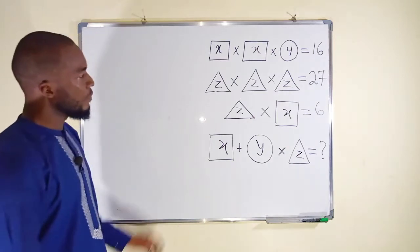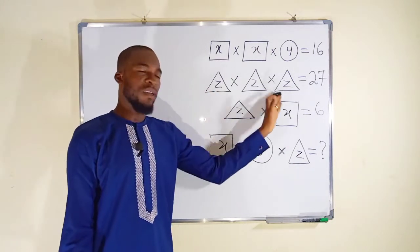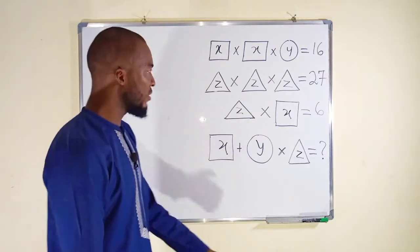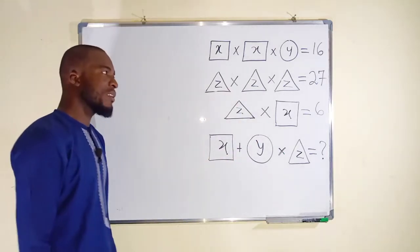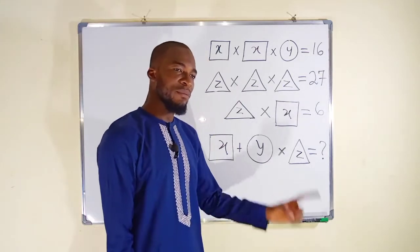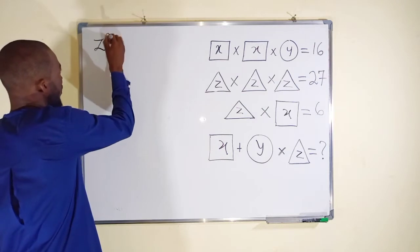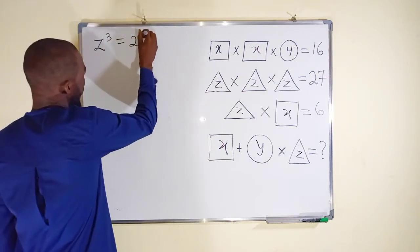If you consider the second equation it has the same variable so we can use it to start. z times z times z is equal to 27. z times z is z squared, times z is z cubed. So we have z power 3 equals 27.